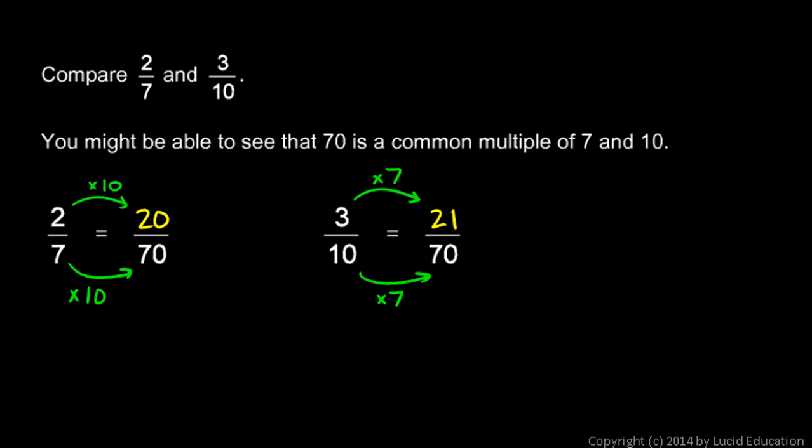So I can write my answer like this. I can just write 3-tenths is greater than 2-sevenths. And I've done what I was assigned to do. Compare 2-sevenths and 3-tenths. And there it is. 3-tenths is greater than 2-sevenths.